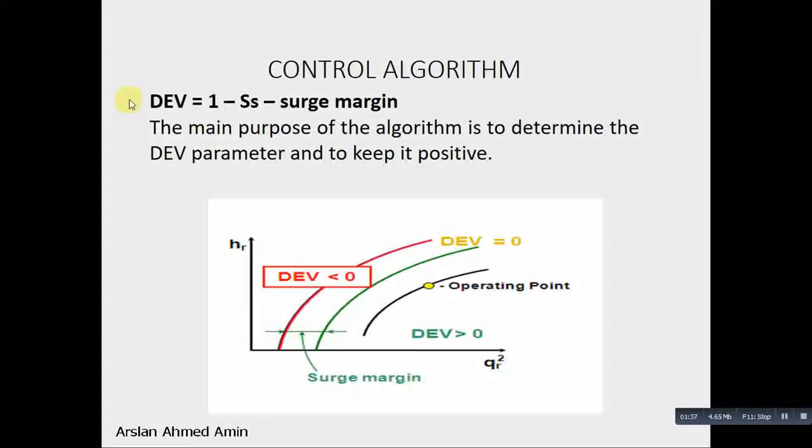Another parameter which is defined as deviation, which is equal to 1 minus Ss minus surge margin. A surge margin which can be 5 to 10%. The main purpose of the algorithm is to determine the deviation parameter and keep it positive.